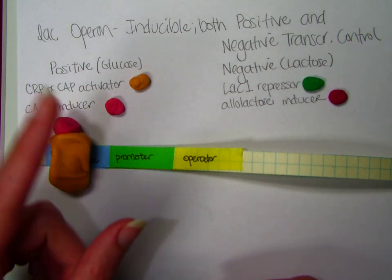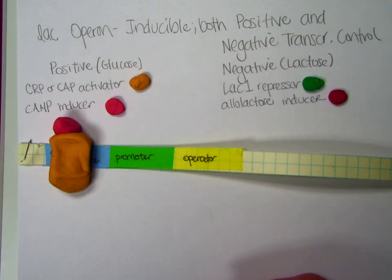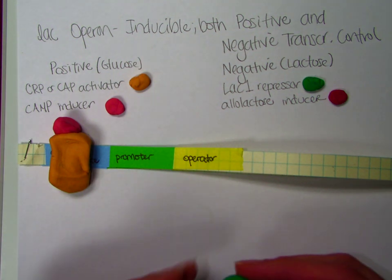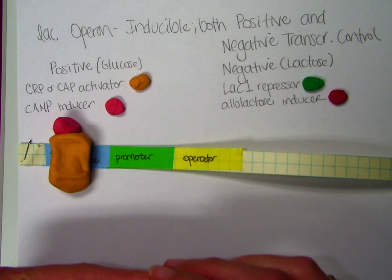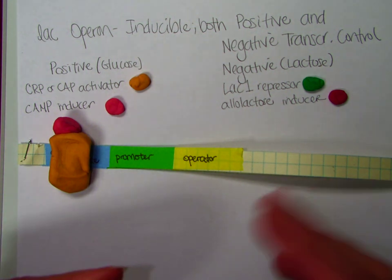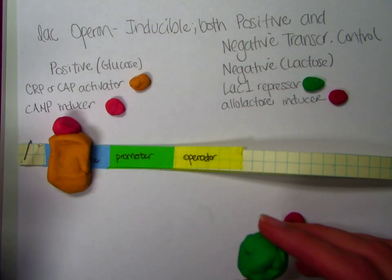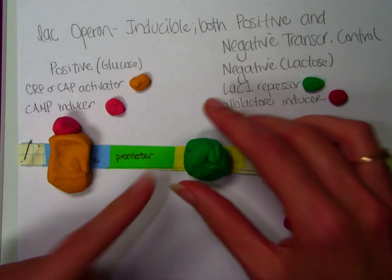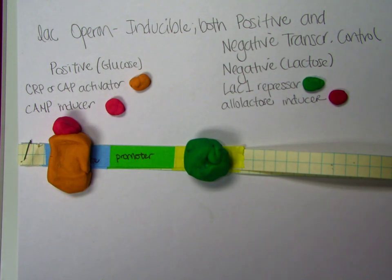If glucose is absent and lactose is absent, say that we're putting these guys in, I don't know, the urea test or something. So there's no sugar at all for them. Well, okay, it's a bad example. There's actually glucose in that one. They're putting them in the citrate test where the only sugar is citrate. So then we're going to have the activator present because there's no glucose, but we're also going to have the repressor present because there's no lactose.